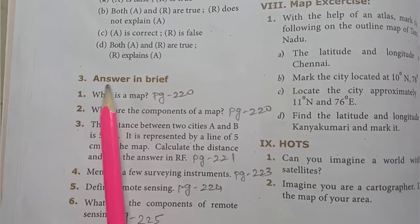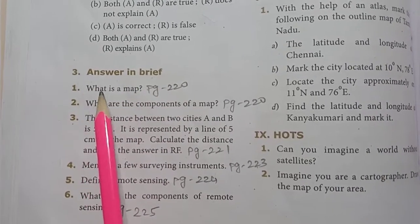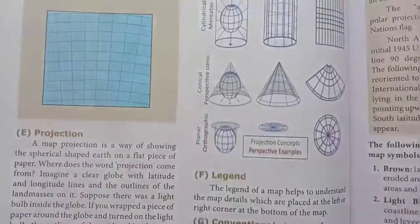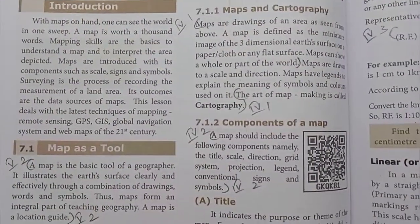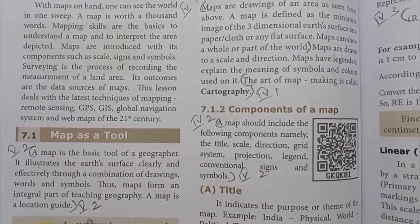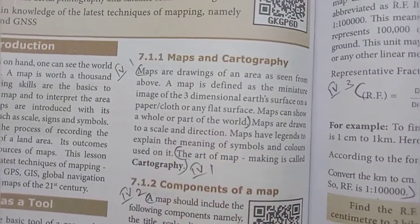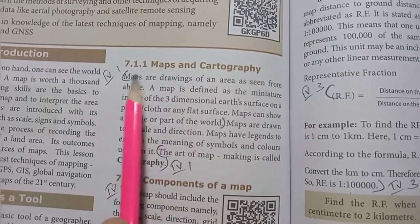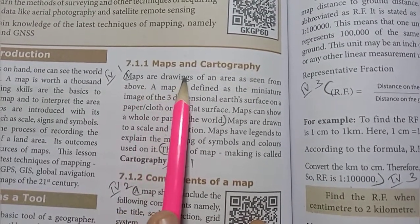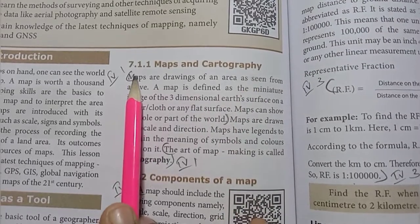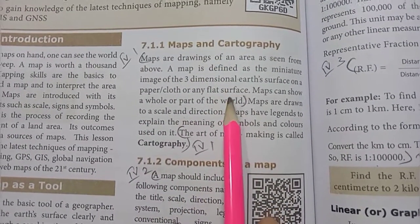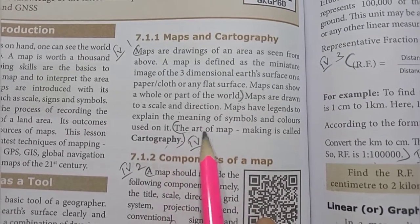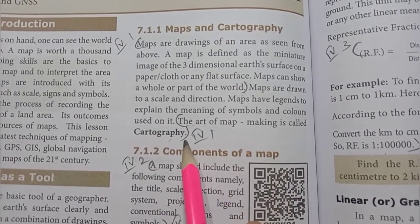Third one, answer in brief. What is a map? Page number 220, turn to page 220. Maps and cartography. Maps are drawings of an area as seen from above. Lines 1, 2, 3, 4, 5th line, part of the world. Last line, the art of map making is called cartography.